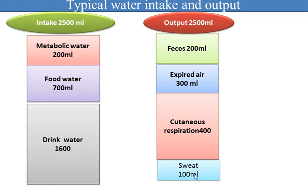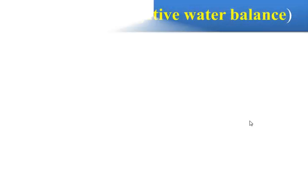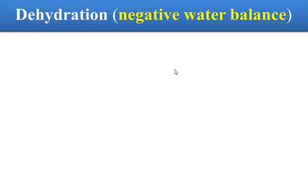We also lose about 100 ml of body water via sweat. When we lose more water than we gain, we call it dehydration — this is a negative water balance. We must have equilibrium between water gained and water lost — between intake and output. When there is an imbalance, we have a negative water balance and we become dehydrated.